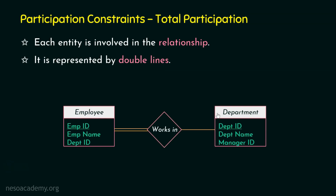Here is an example. There are two entities: employee and department, each with some attributes. The relationship between them is 'works in' — an employee works in a particular department. Now, every employee will definitely belong to a department, so from the employee's perspective, this is a total participation. Any employee you take will belong to a particular department, so this connection is shown with double lines.